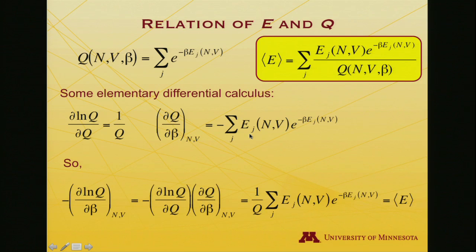If I now take the negative of the partial derivative of the log of the partition function with respect to beta holding N and V fixed, by the chain rule, partial log Q partial beta equals partial log Q partial Q times partial Q partial beta. I just worked out what those two things are: partial log Q partial Q is 1 over Q, and here's partial Q partial beta.